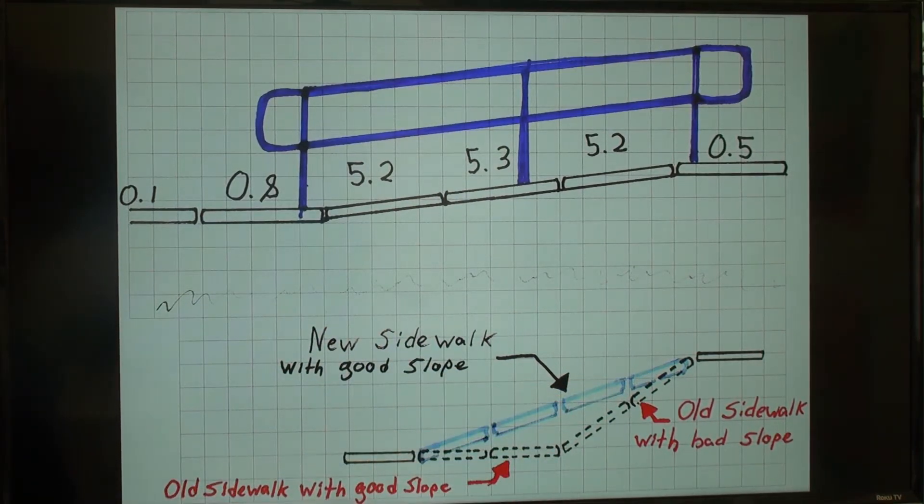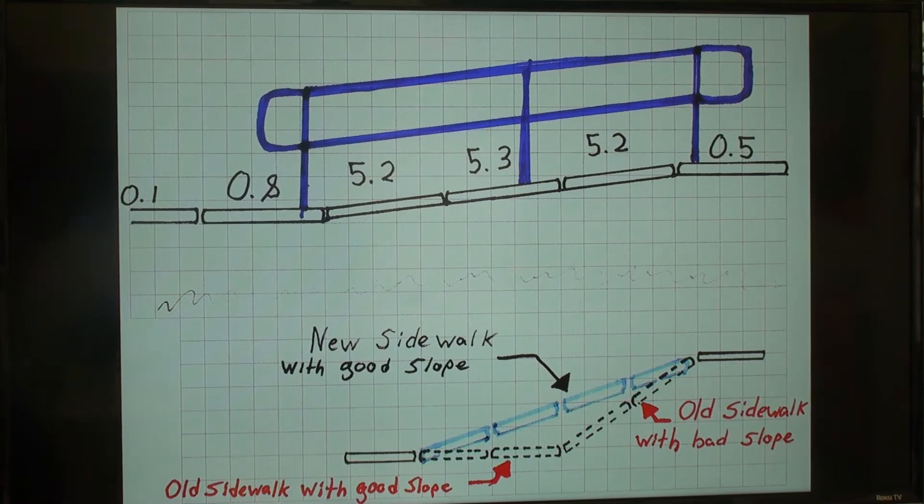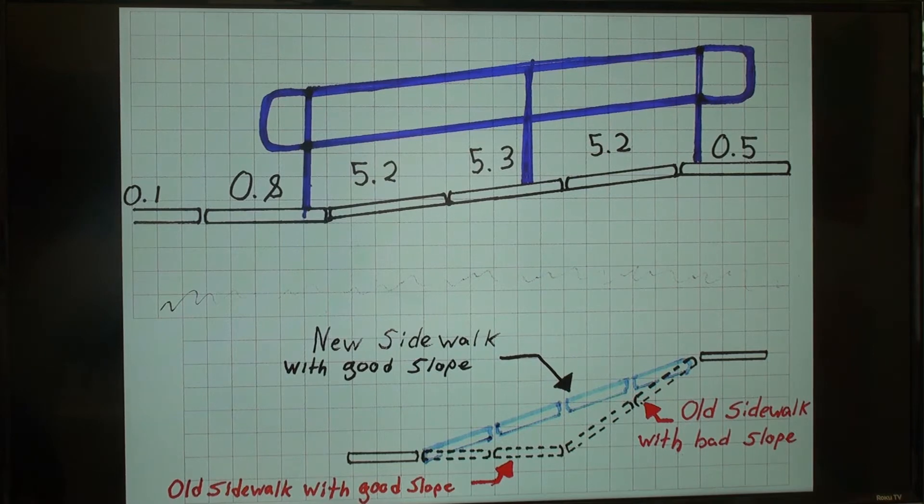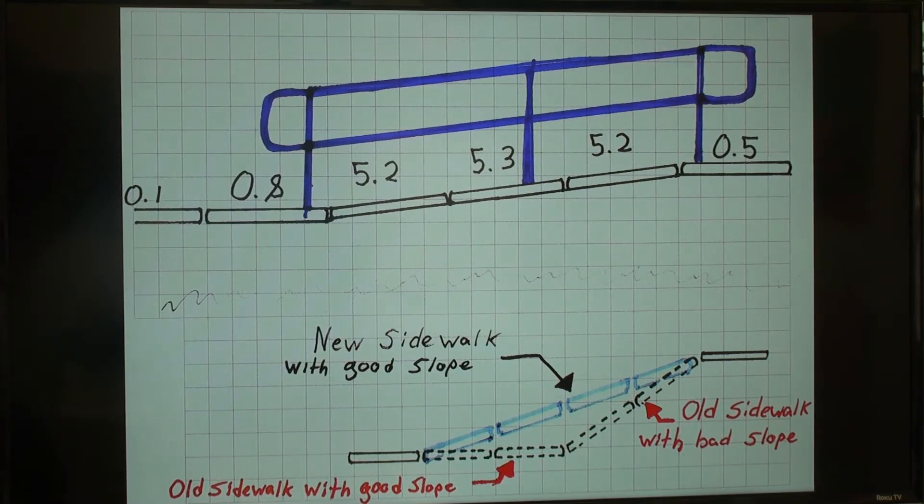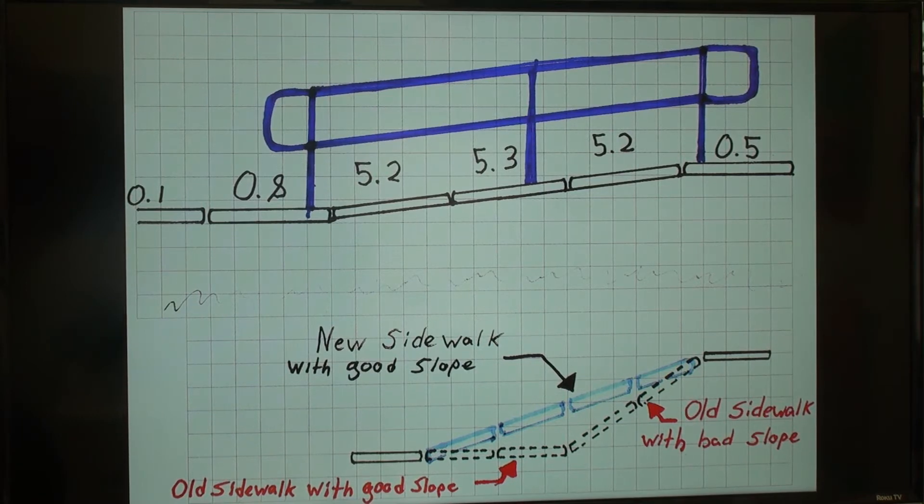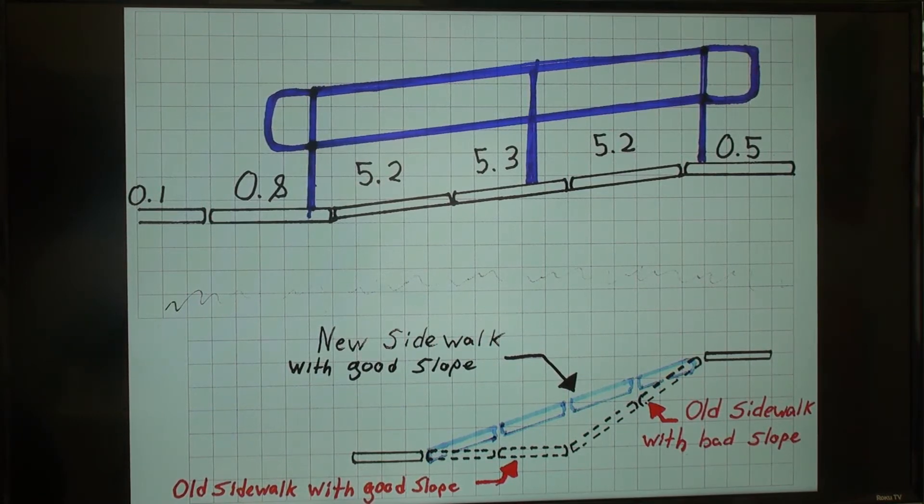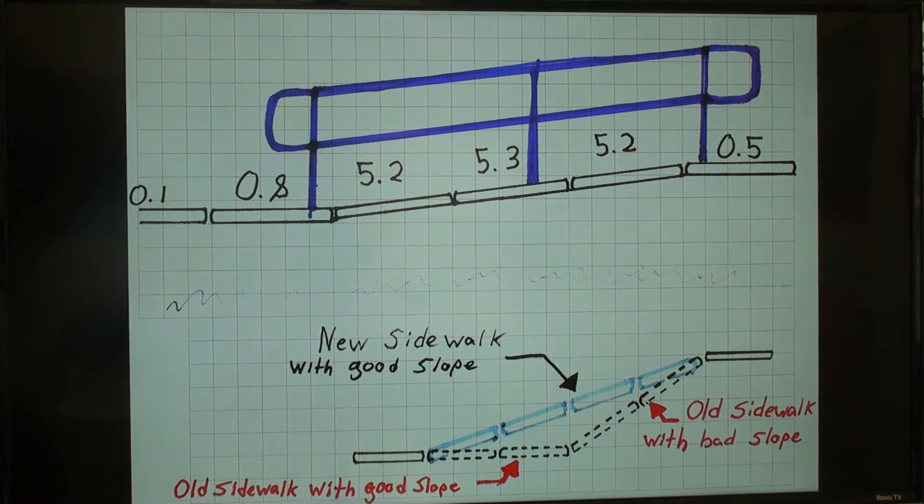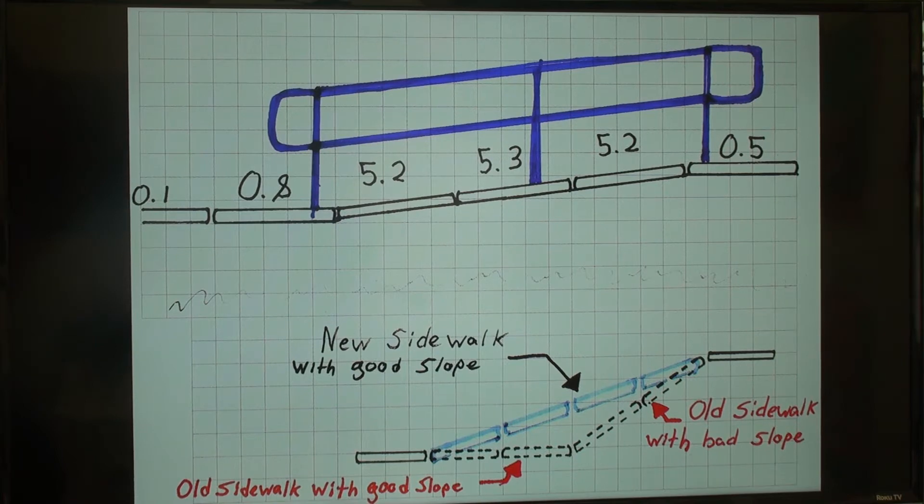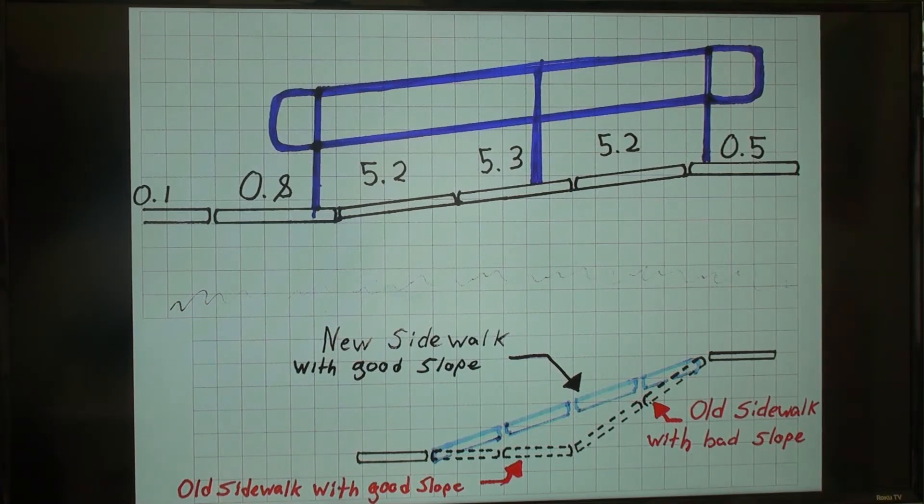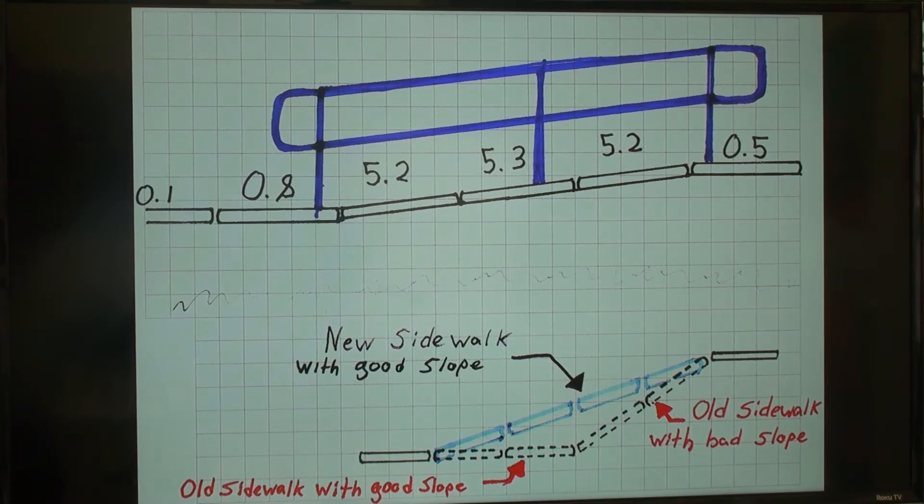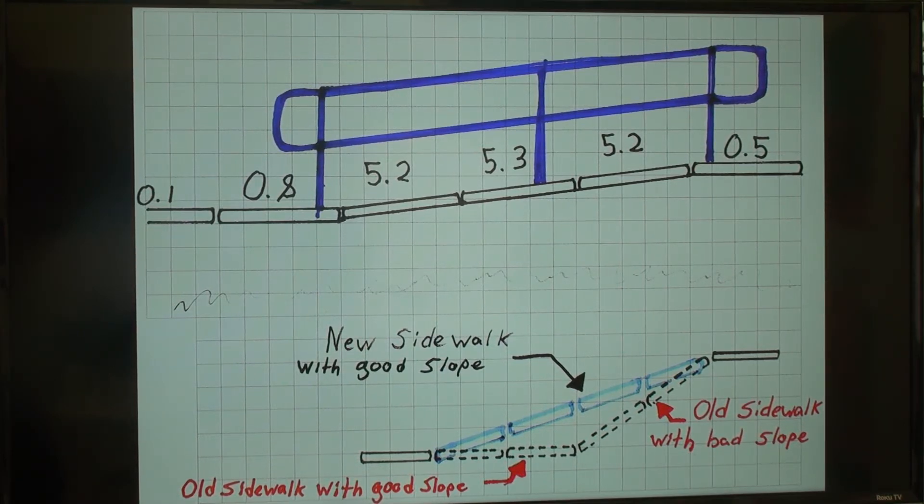While this is a possible solution to the problem, this scenario does not actually call for the demolition of any panels. Instead, we will simply add some railing and turn this sidewalk into a ramp. We can do this because all panels are less than 8.3% slope. As a general rule, you want to avoid demolition whenever possible. If it comes down to choosing between a ramp and demolition, choose the ramp.